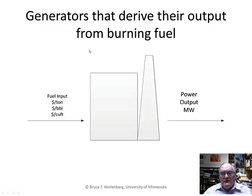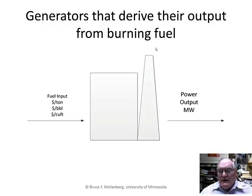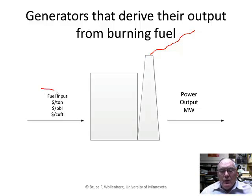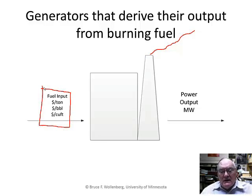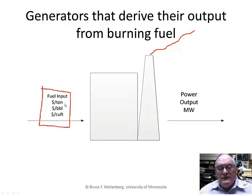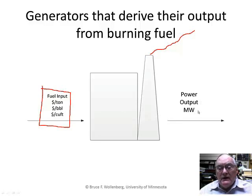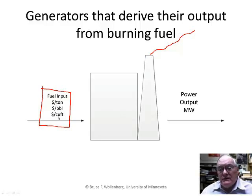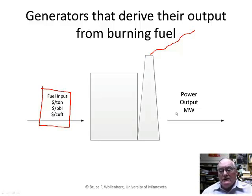Let's start with the very basics of a power plant. Here we have a power plant — we can picture smoke coming from this smokestack. In order to get any power out, you have to put fuel in. Fuel costs money, so many dollars per ton, dollars per barrel, or dollars per cubic foot of gas. Power output is in megawatts, and the more megawatts, the more fuel per hour you have to put into the unit. The general way of looking at this is that dollars translate to megawatt hours of energy that the power plant puts out.